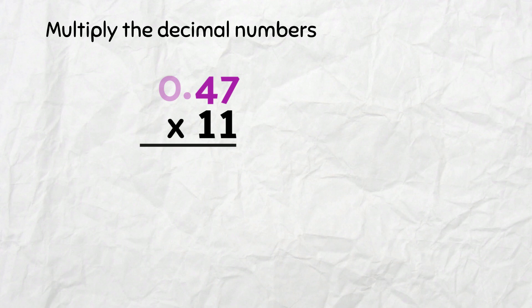First row: 47 times 1 equals 47. Second row starts with a 0 because we're multiplying by 10. 1 times 7 is 7, and 1 times 4 is 4. Now add them up!